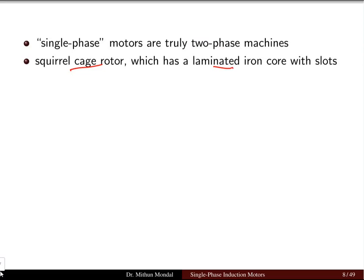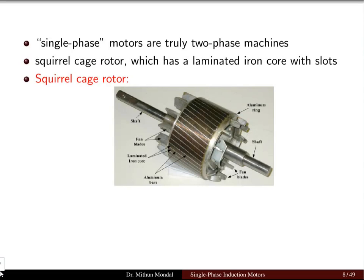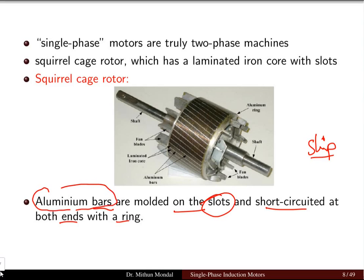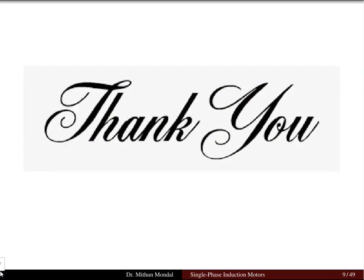The squirrel cage rotor has a laminated iron core with slots containing aluminum bars that are tilted and act as windings. These aluminum bars are molded in the slots and short-circuited at both ends with a ring. Unlike slip ring induction motors where external resistance can be added, in squirrel cage rotors no external resistance can be added. This completes the basic introduction to single-phase motors, with a focus on single-phase induction motors. See you in the next lecture.